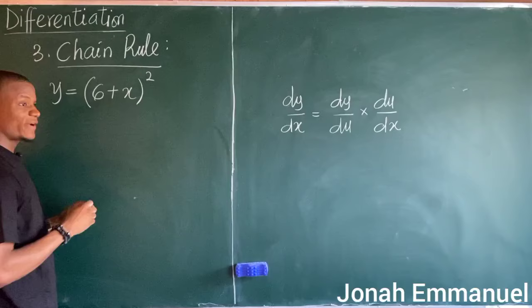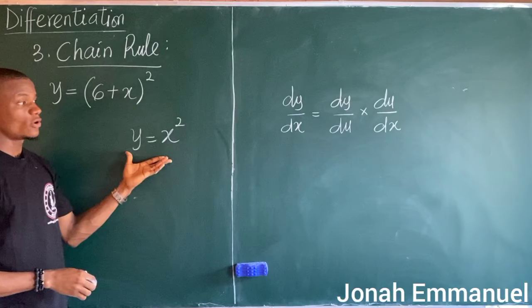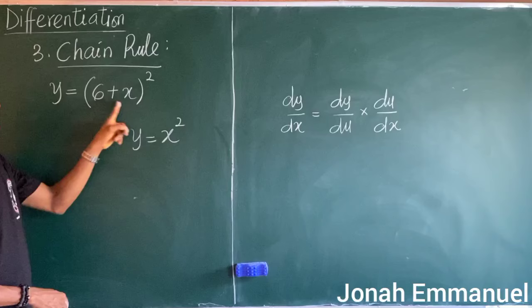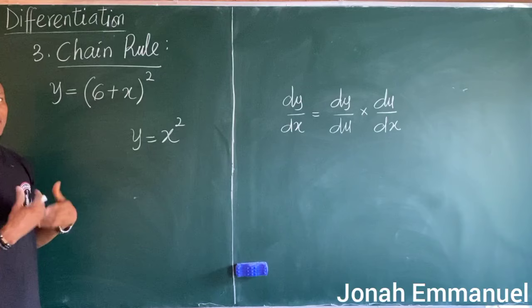Here's your case: what if I had y equal to x squared? Obviously you know that dy/dx is equal to 2x using the general method. So what if I have y equal to (6 + x) to the power 2? What is dy/dx here? It's not as straightforward.